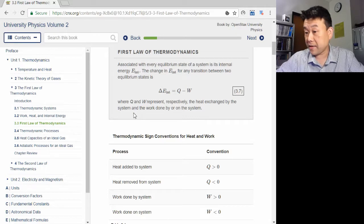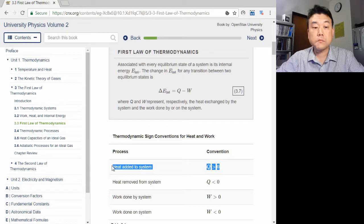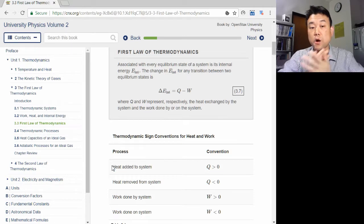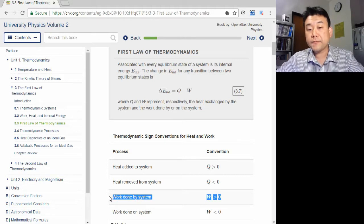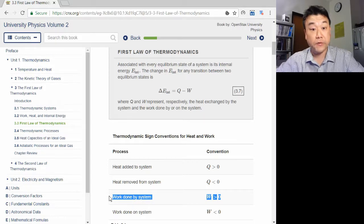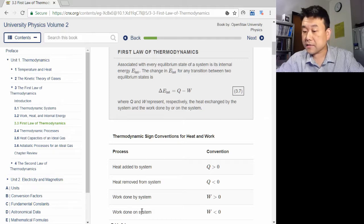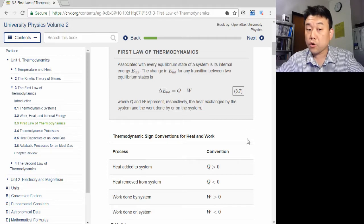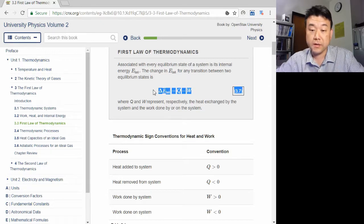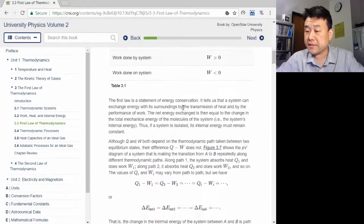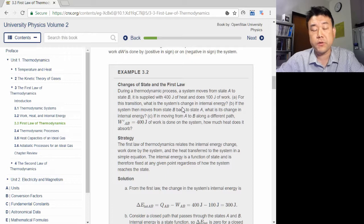So when heat flows into the system, Q is positive. When the system does work, W is positive. And if someone is doing work on the system, increasing its energy, W is actually negative. You can see that this sign convention combined with how equation 3.7 is written out, it all works out. So please look through the examples to get good understanding of the first law. It will help you with your homework assignment.